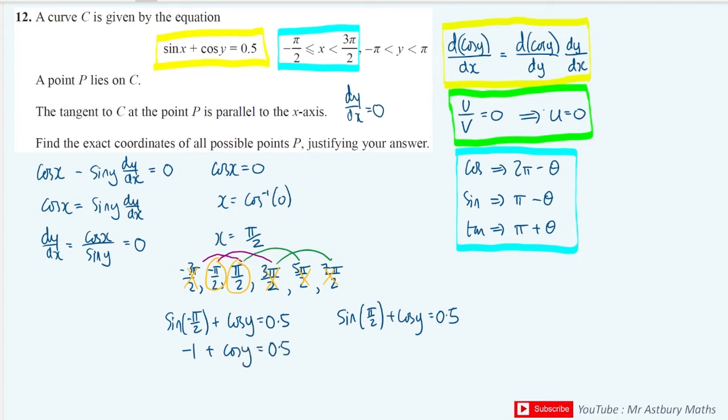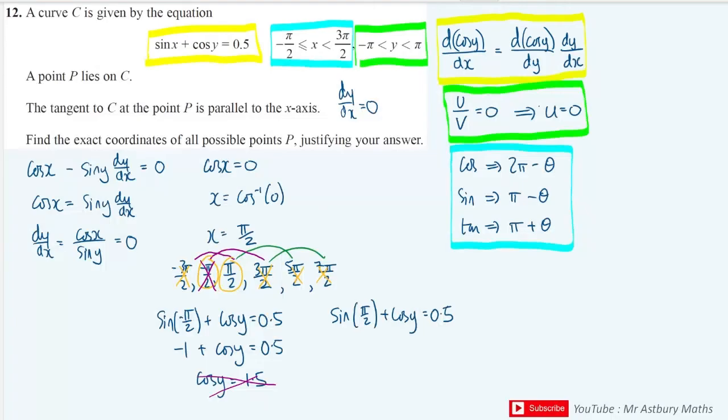So this will give me cos y is equal to 1.5. And that's out of the domain of cos, because cos needs to be between minus 1 and 1. So therefore we cannot have a value of cos y equal to 1.5. So we must reject this solution. And in fact we must reject x is equal to minus pi over 2, because it's not going to give me a correct y value. And rejecting this solution is important, because you need to show this in order to get the full marks in this particular question.